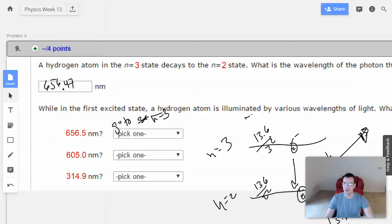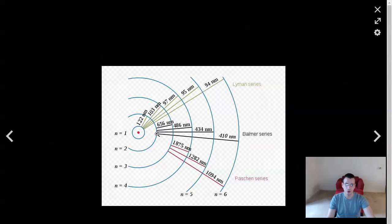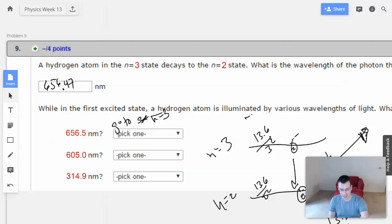Then, it says, what happens if you hit it with 605? Well, 605. So, 605 is a shorter wavelength. So, it has more energy. But, it would be between the n equals 3 and n equals 4. And since it has to be quantized, i.e., it has to hit it almost exactly. Maybe exactly? It has to hit it exactly. Otherwise, it will do nothing. So, nothing is going to occur. Nothing will happen here.